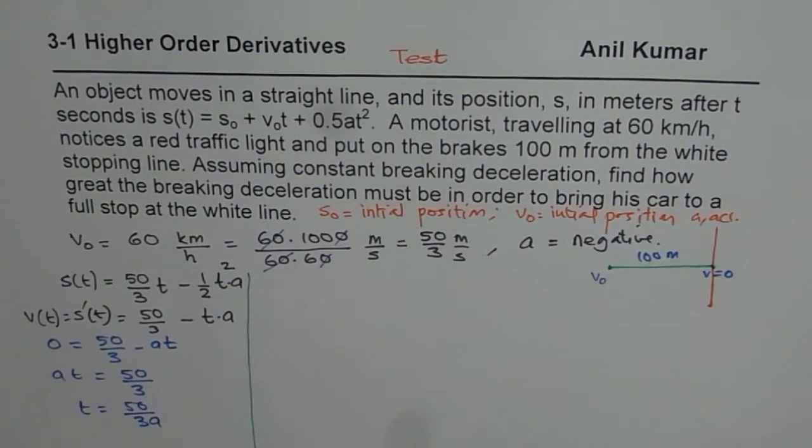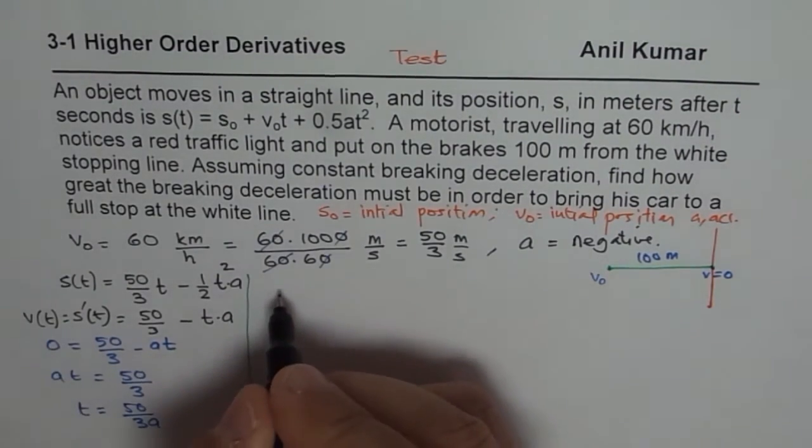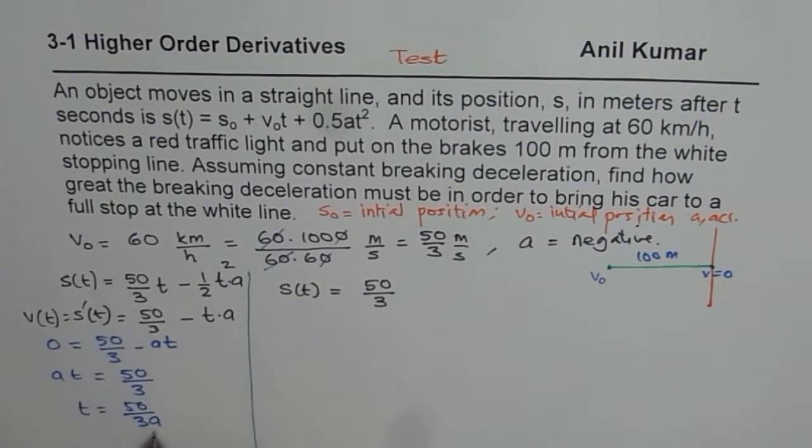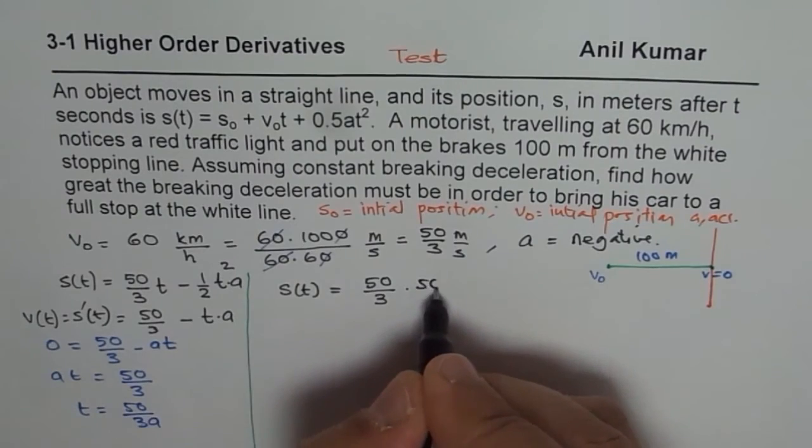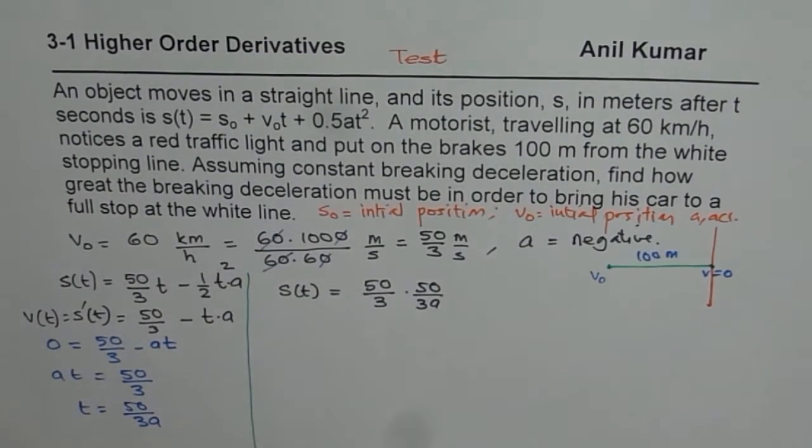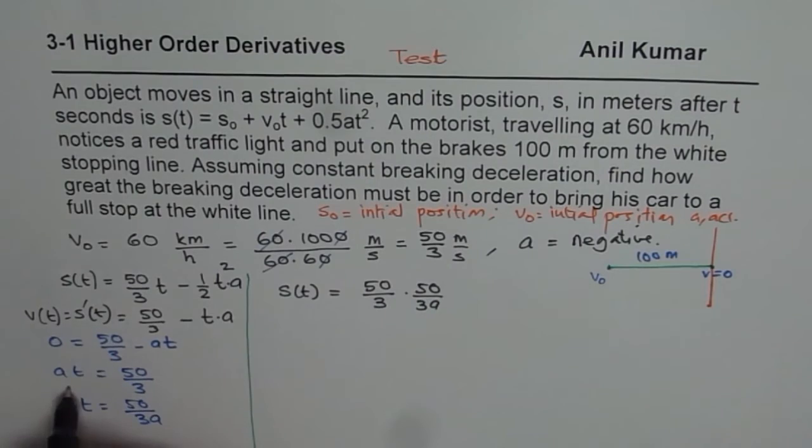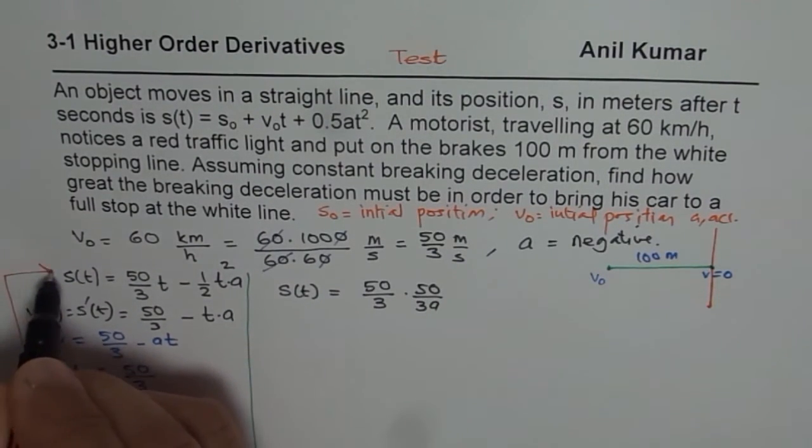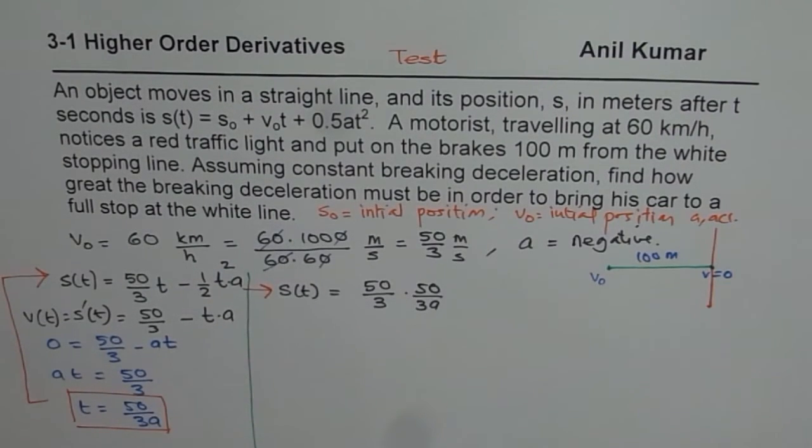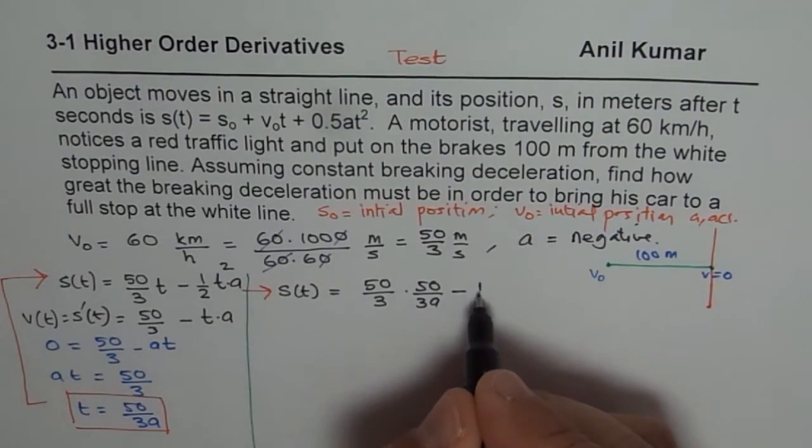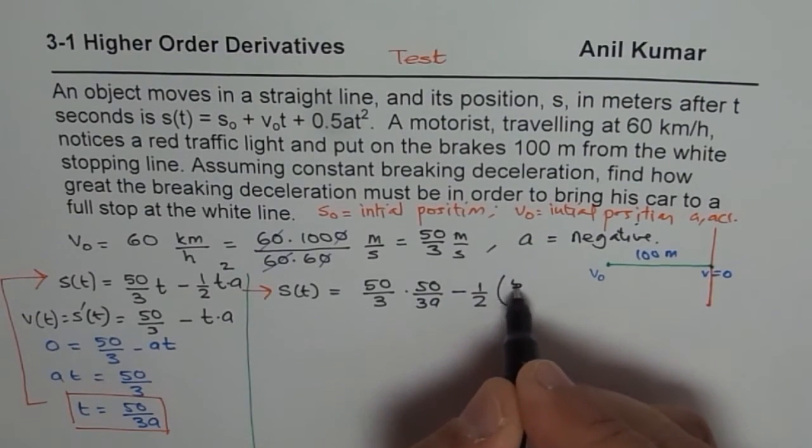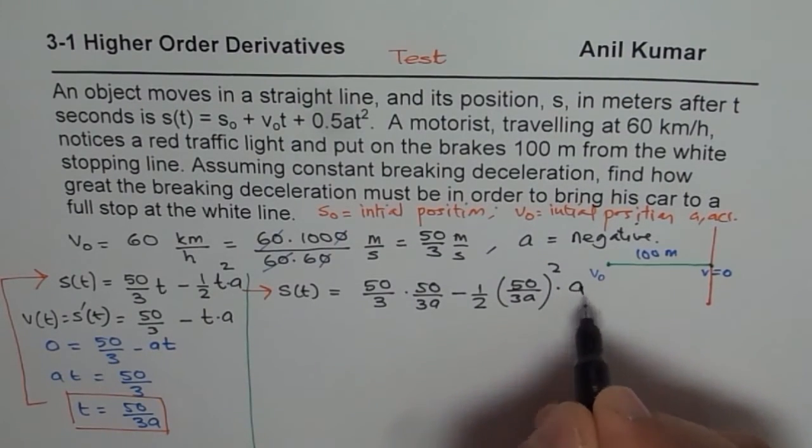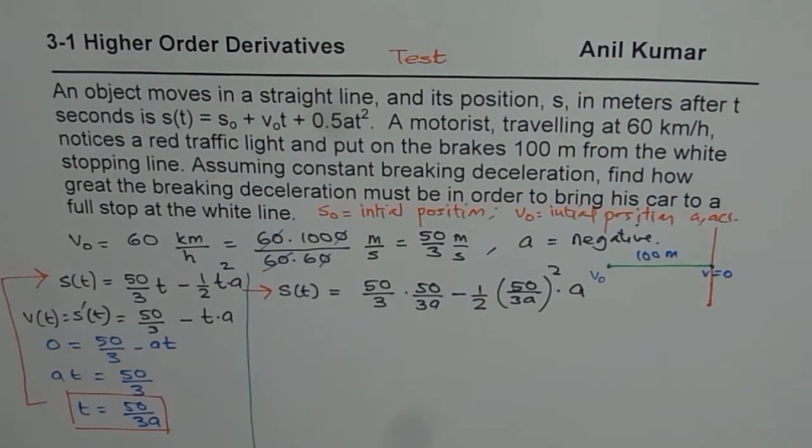So let's equate 100 for here. Let me rewrite the equation first. So we have s(t) equals 50 over 3, and time is 50 over 3a. We are substituting this time in the first equation. So this is what we are doing. Substitution, getting it here. I hope that is very clear. Minus half of 50 over 3a whole square times a, you get the point. So that is how we get our equation.